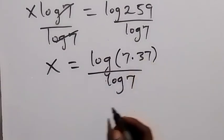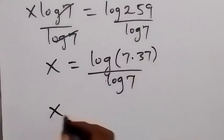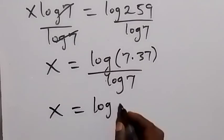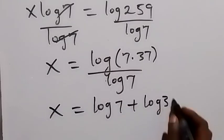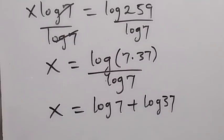when two numbers multiply, we can separate into sum of two logs and that will be log 7 plus log 37, then all over log 7.